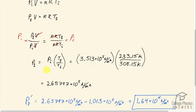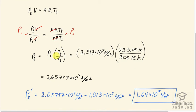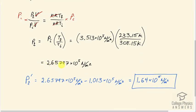So the final pressure is the initial pressure times the final temperature divided by the initial temperature. So that's 3.513 times 10 to the 5 newtons per square meter absolute initial pressure times 233.15 Kelvin divided by 308.15 Kelvin, which is 2.65797 times 10 to the 5 newtons per square meter.